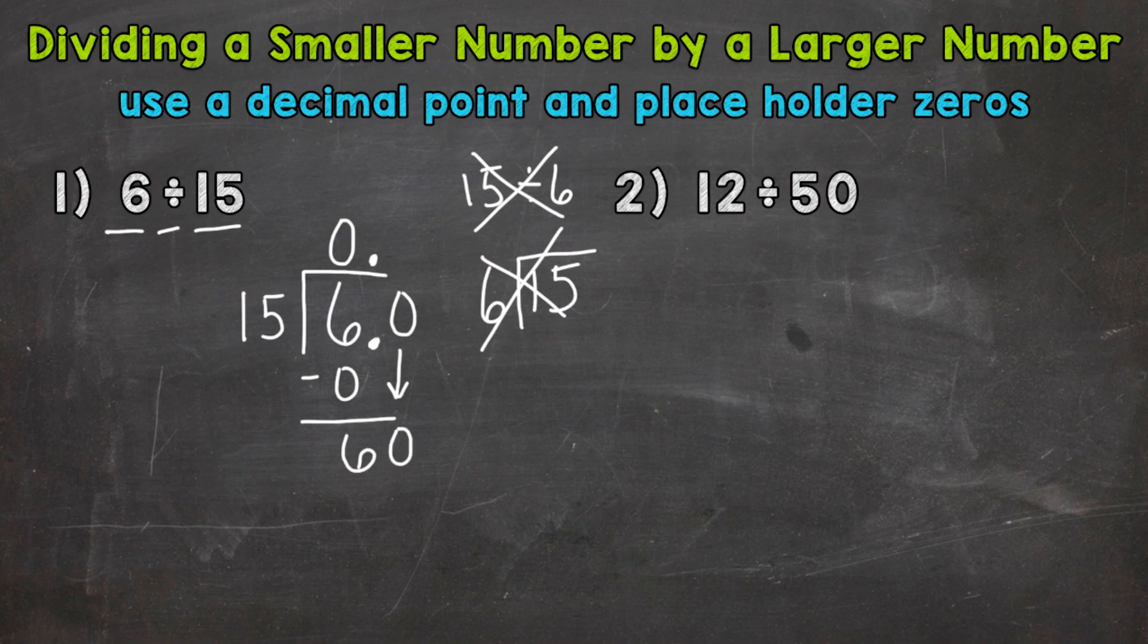So now we have 60 divided by 15. How many whole groups of 15 out of 60? Well, 4. That hits 60 exactly. So 4 times 15 is 60. Subtract. And we get 0. So we are done. Our answer is 4 tenths.